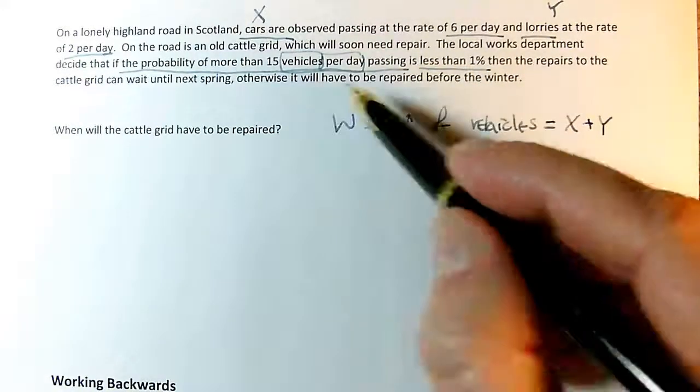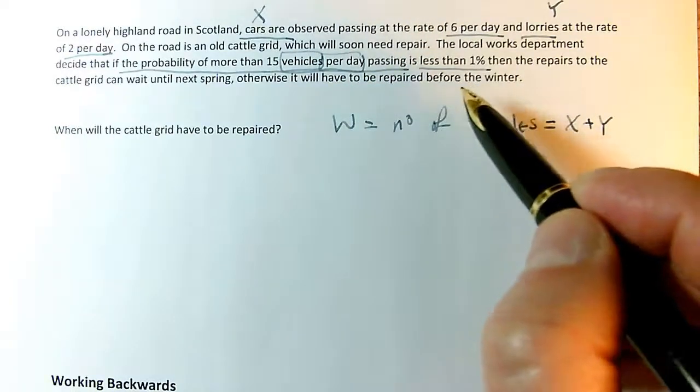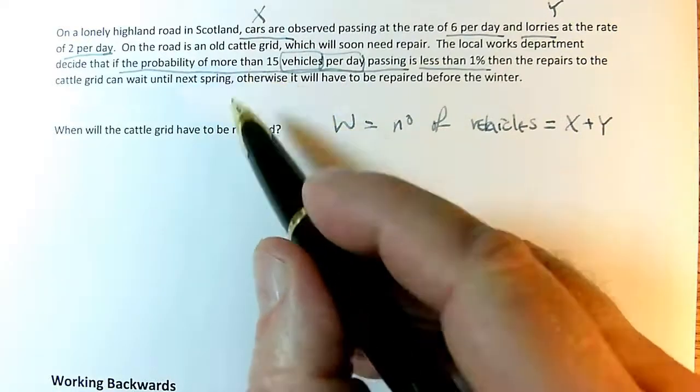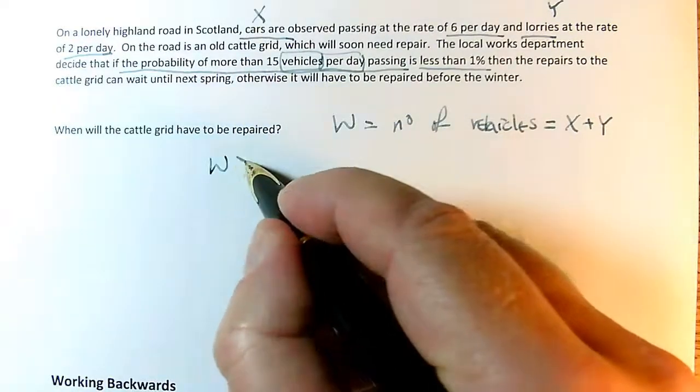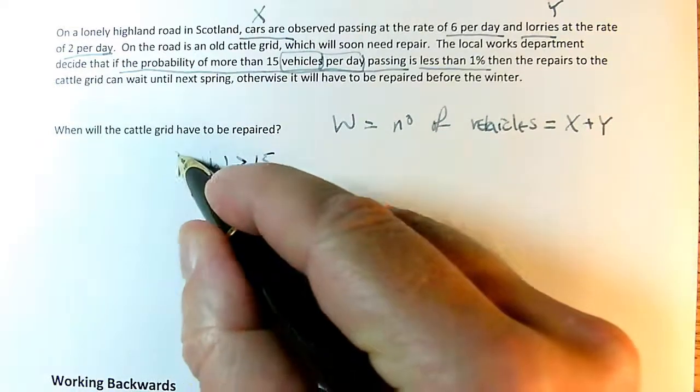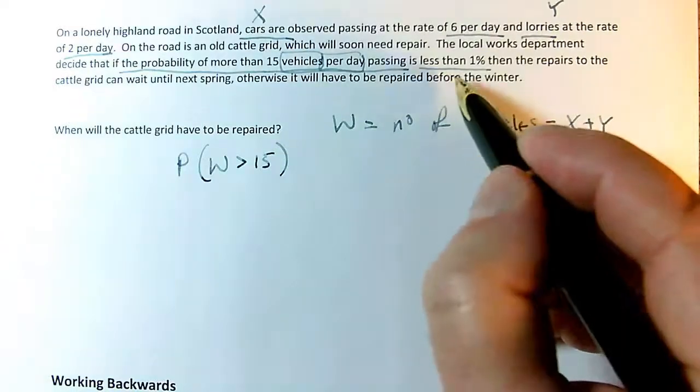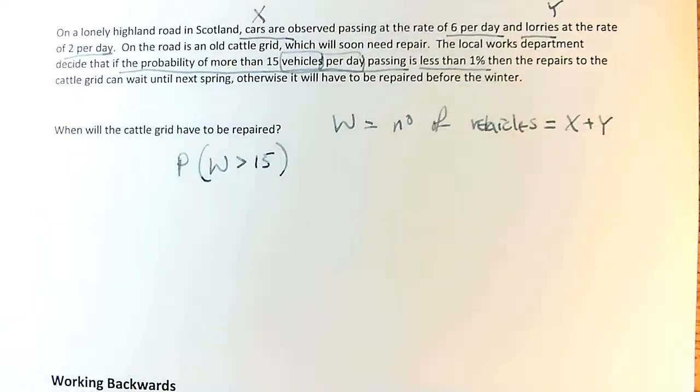This looks confusing - more information than I needed. But this just means I'm going to do a comparison at the end. If W, the total number of vehicles, has to be more than 15, I can work out the probability of W being more than 15, and then compare it with that 1%. Don't be fooled when they give you too much information. It may just be that you get an answer and then compare with that given value.